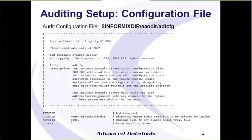First of all, there's a configuration file. In the same way Informix has an onconfig file to change certain parameters, auditing has the same thing. If you've got Informix installed, you'll already have this standard configuration file for auditing. It's in INFORMIXDIR/AAODIR, and the file is ADTCFG. There are only four values in this file to change, so there's not a lot of configuration. There's actually an additional value not included in this file, which we'll discuss in a minute.